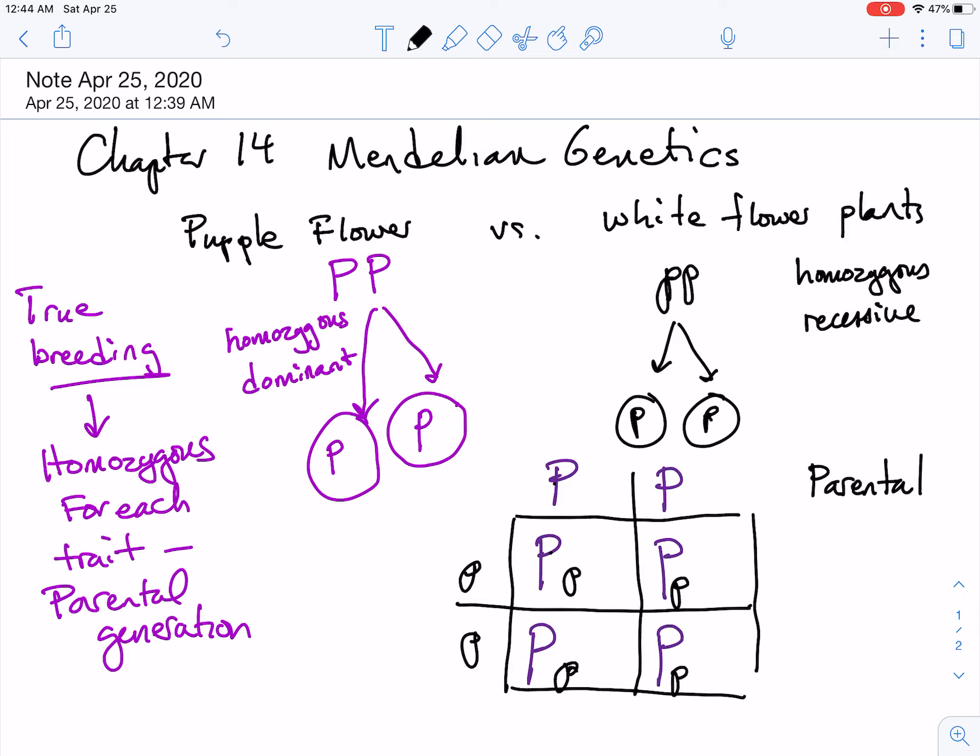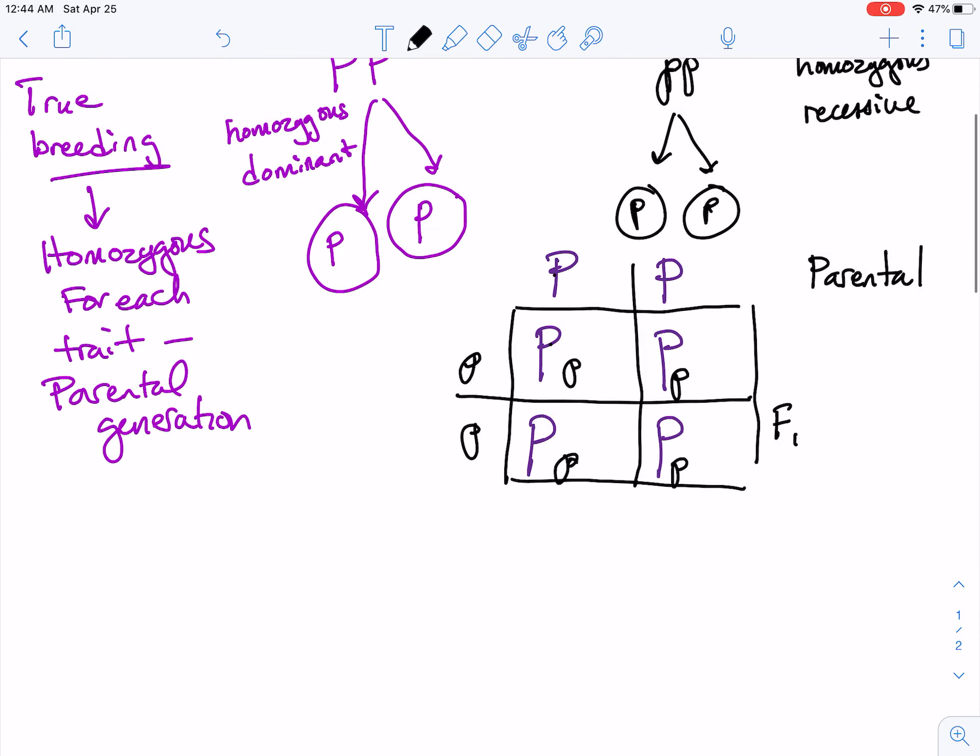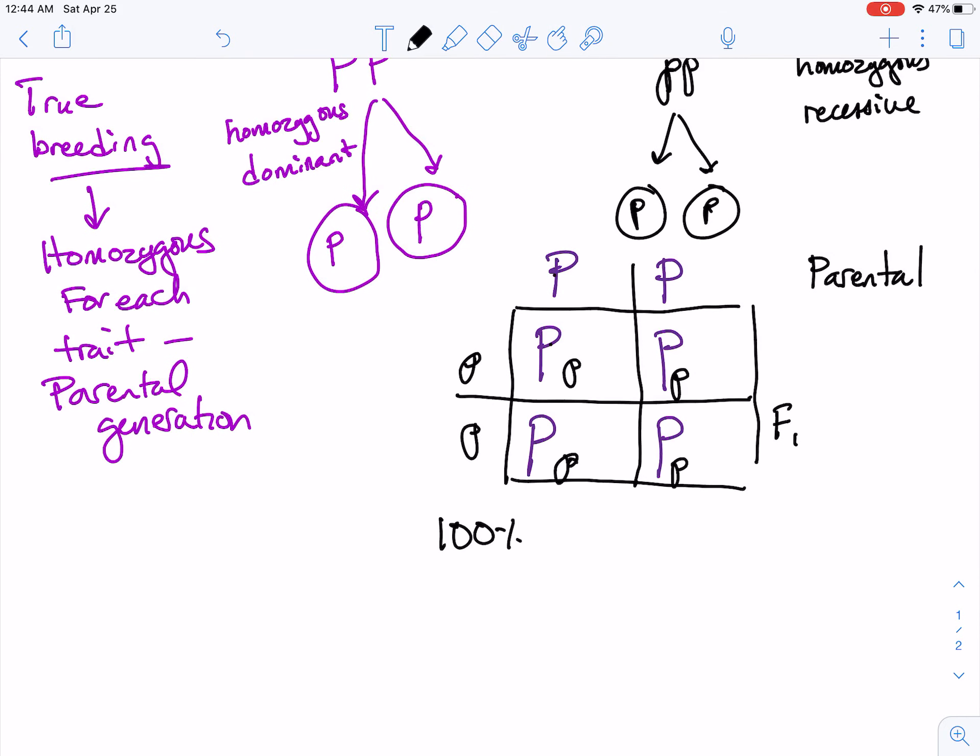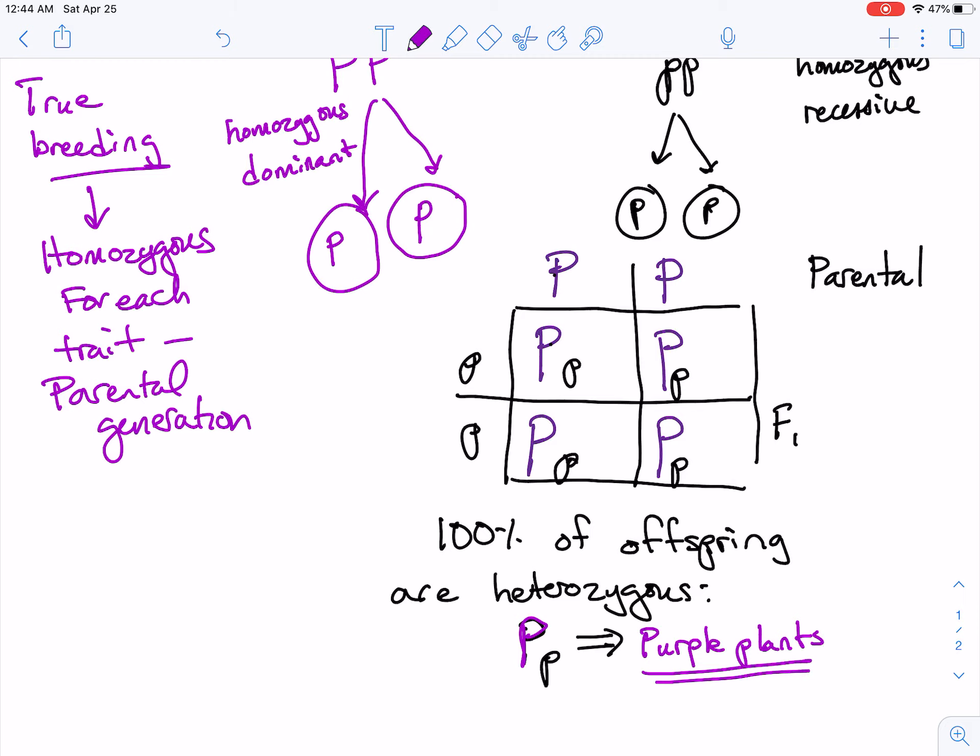And that's for this row. And then let's go for the second row. Again, this is going to be the same thing for the second row - big P, big P, little p, little p. So 100%. So this is F1 generation. 100% of the offspring are heterozygous. And their genotype is big P, little p. And they are 100% purple, so they're purple plants.